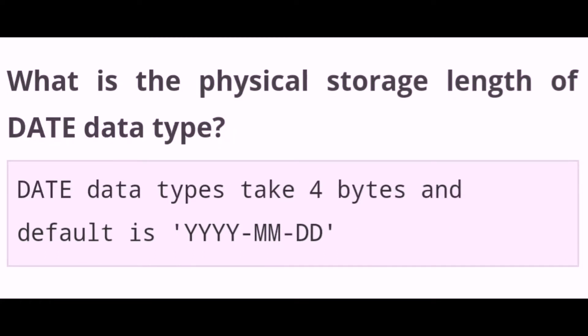What is the physical storage length of the date data type? The date data type takes 4 bytes and its default value is year-month-date.